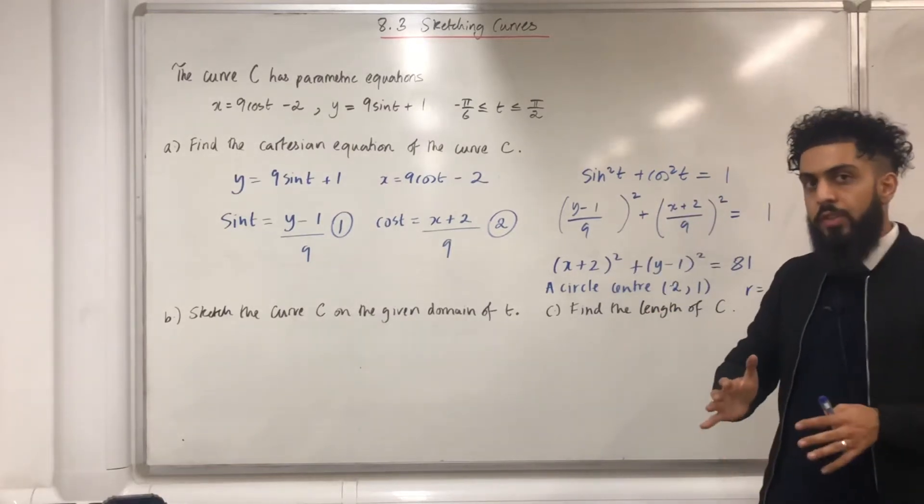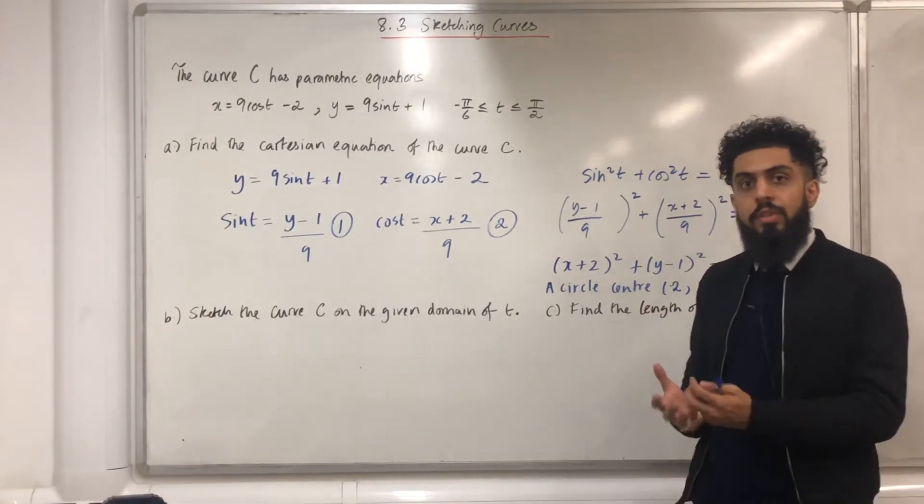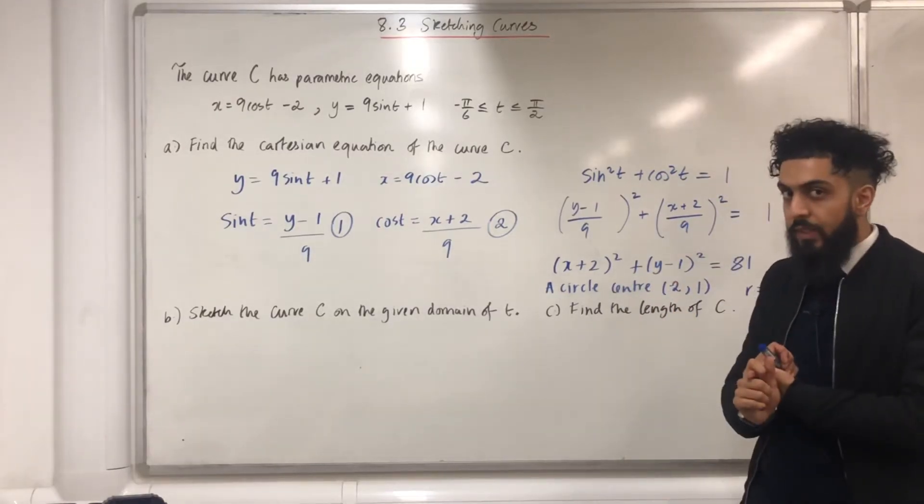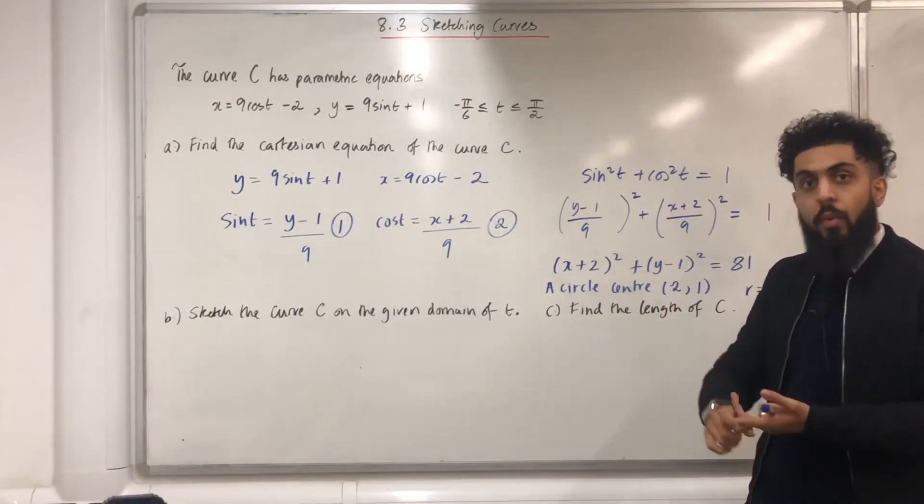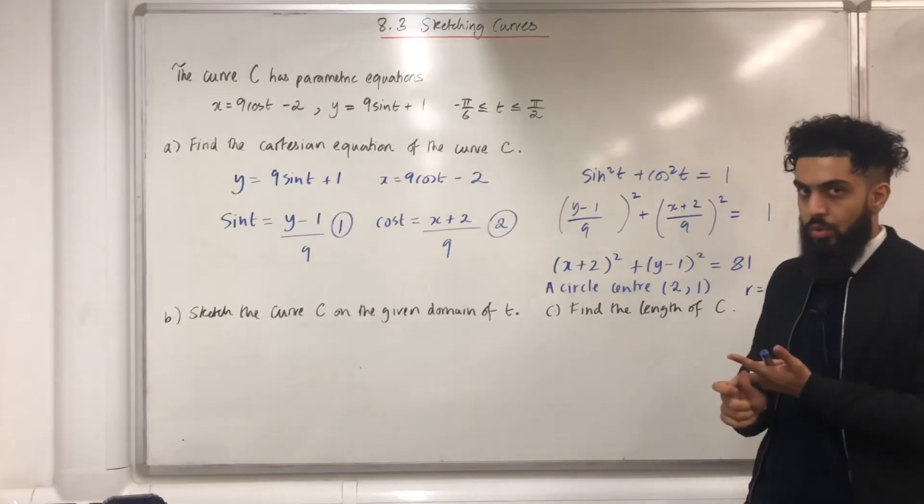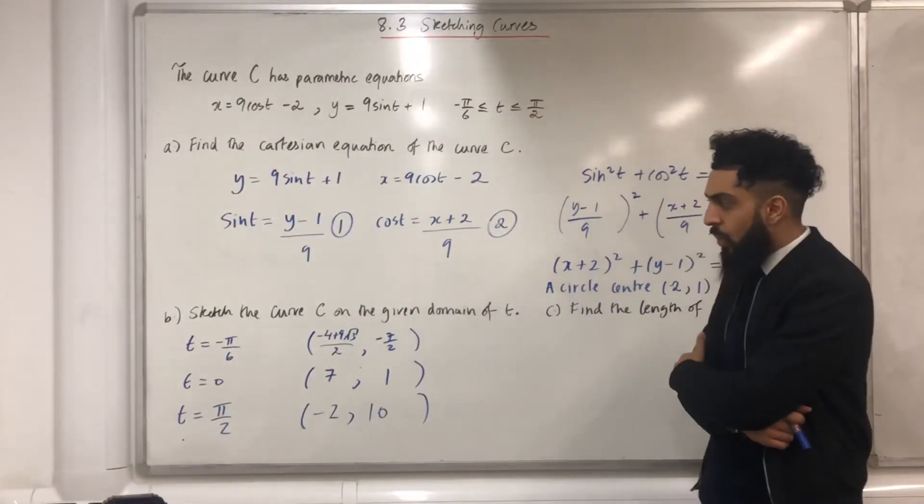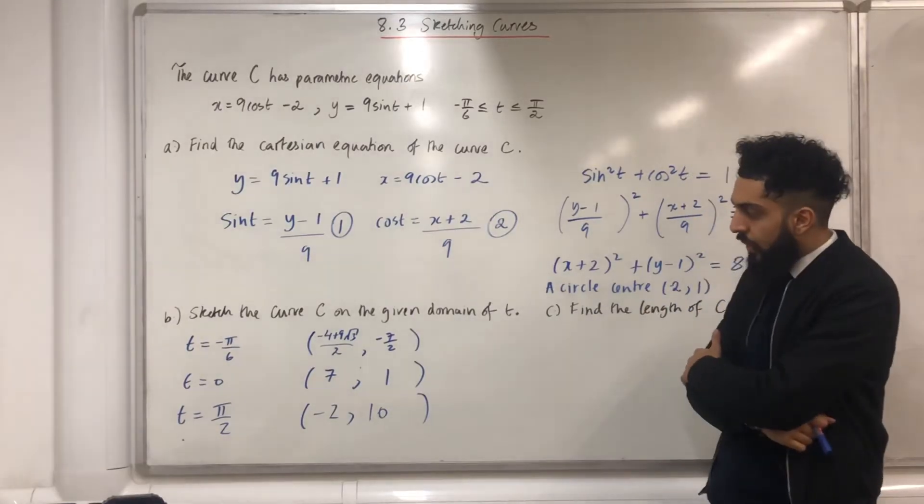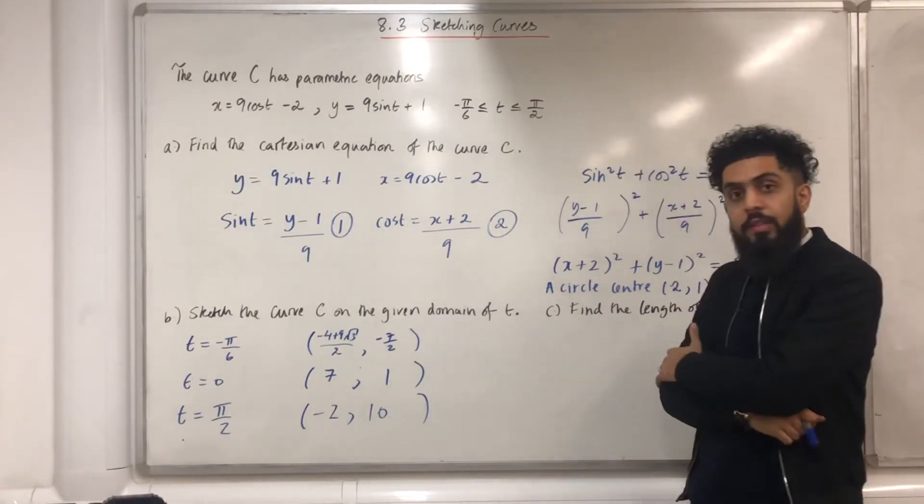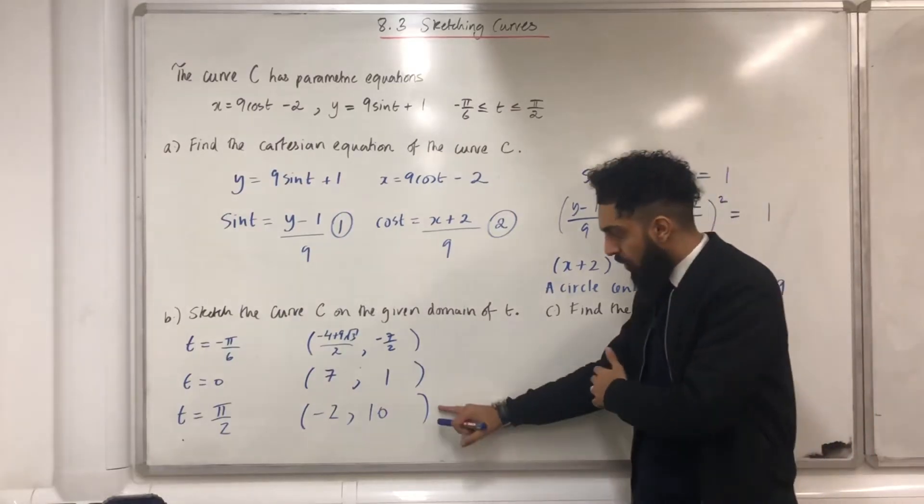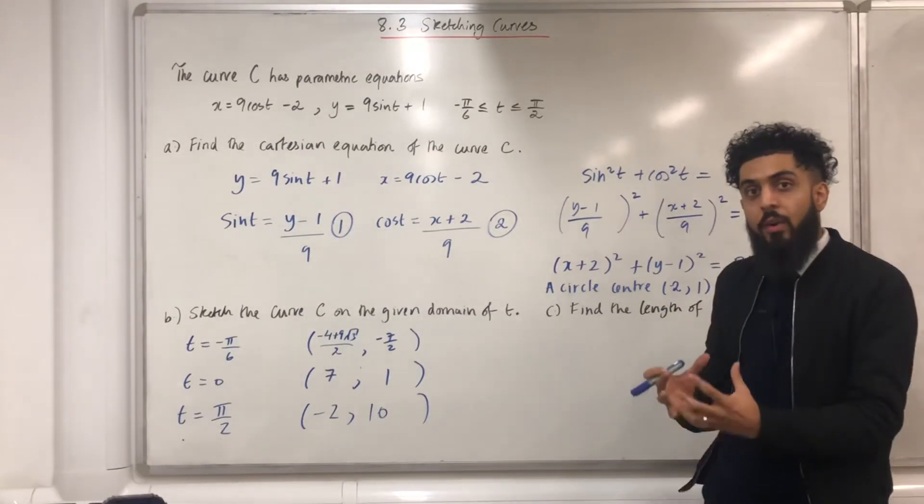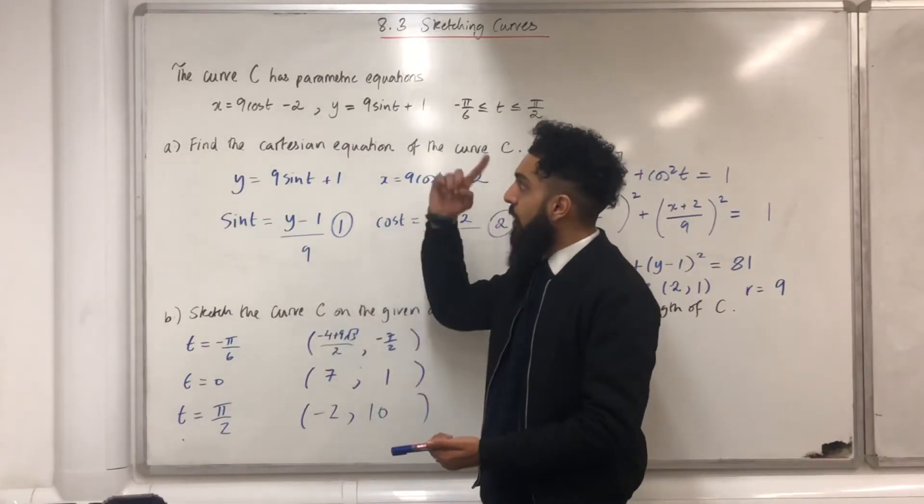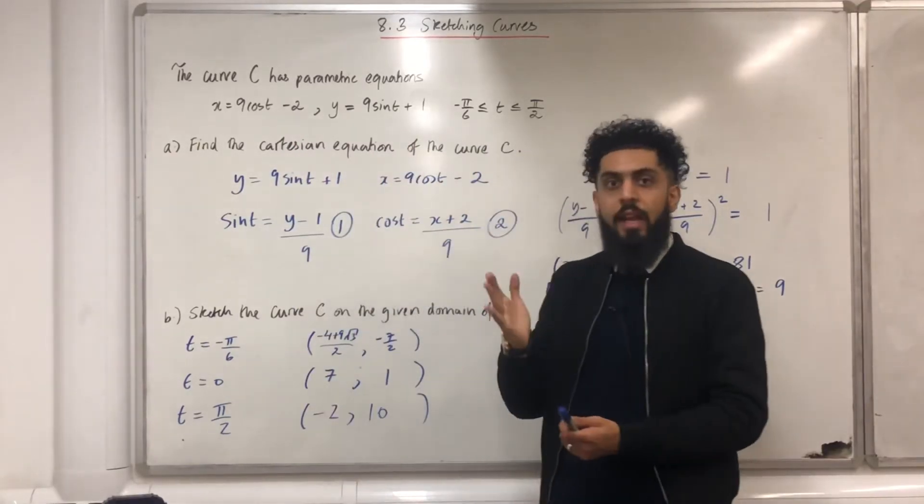Now what I want to do is work out the coordinates on the curve C when t is equal to minus pi over 6, when t is equal to 0, and when t is equal to pi over 2. So when t is equal to minus pi over 6, I've got this coordinate. When t is equal to 0, I've got this coordinate. And when t is equal to pi over 2, I've got this coordinate over here. The way I've calculated the coordinates is by substituting these t values into the parametric equations to generate the x and y value.